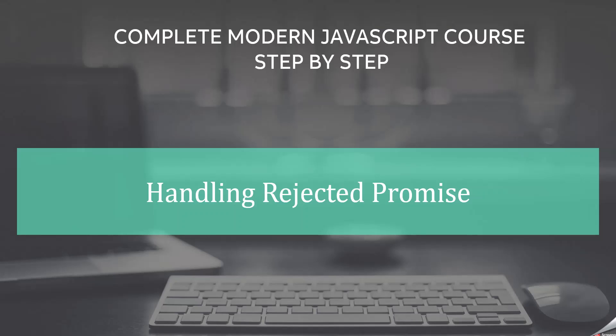In this lecture, you will learn how to handle a rejected promise. When a promise is settled, it has two states: either that promise is resolved or rejected. If the promise is resolved, it will return the resolved data. On the other hand, if the promise is rejected, it will return an error. Let's understand how to handle the error returned by a rejected promise in this lecture.